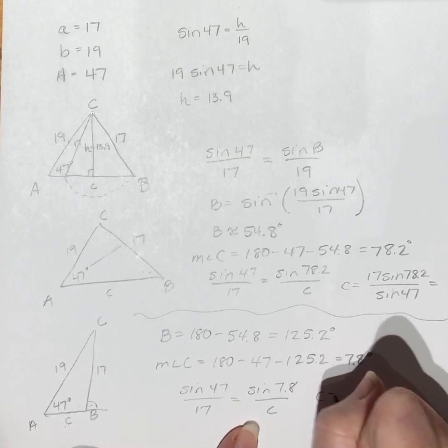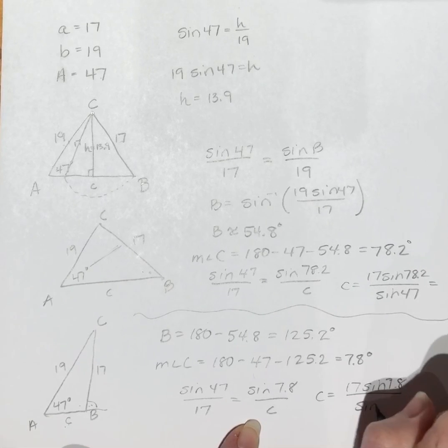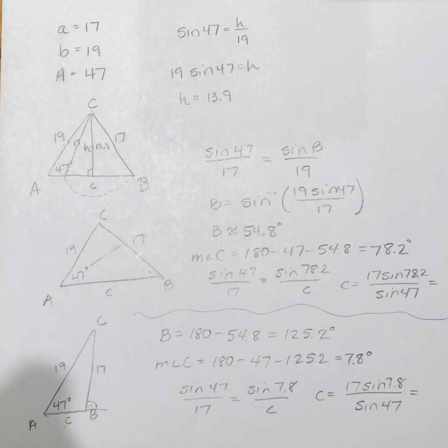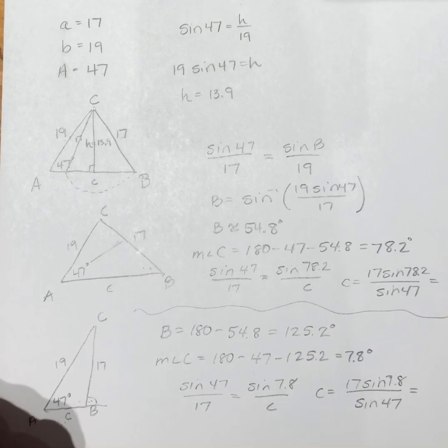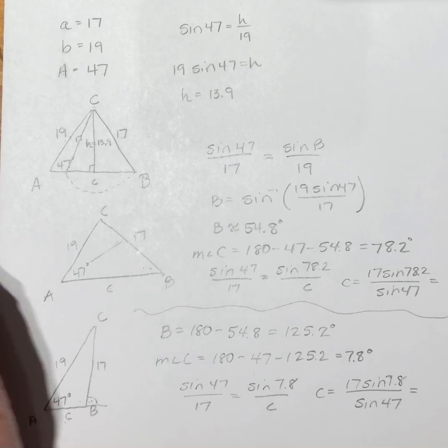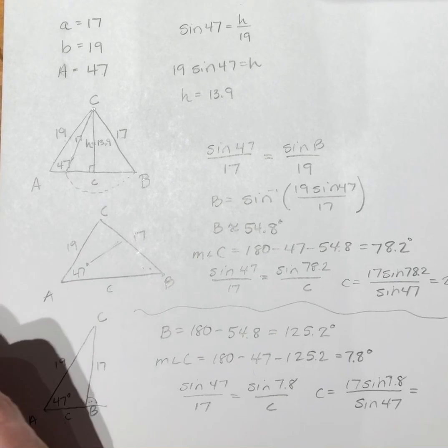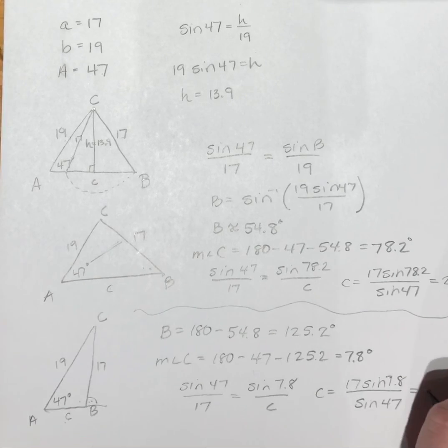And then this one, c will equal 17 times sine of 7.8 divided by sine of 47. And I'm going to put those both in my calculator. So this is approximately 22.8, and this is approximately 3.2.